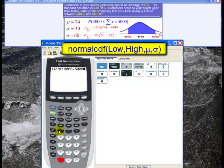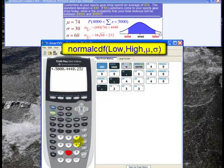Then comma, the mean is 4440, and the standard deviation is about 232. So 4440, comma 232. I close the parentheses and hit enter.